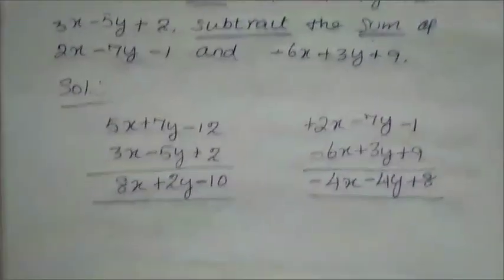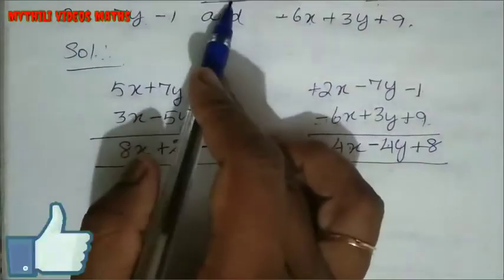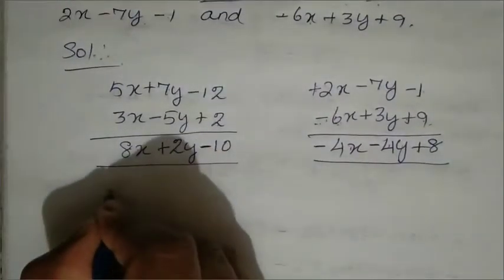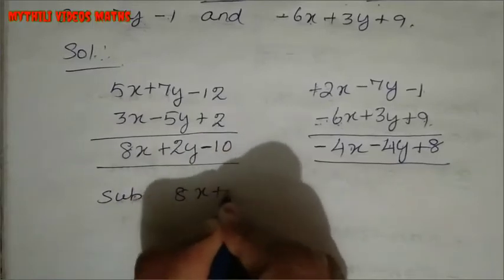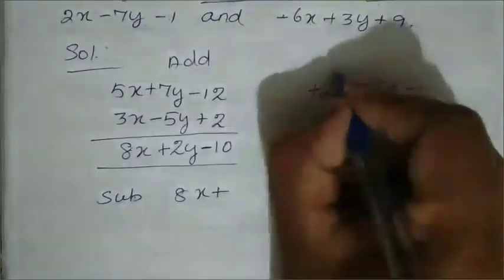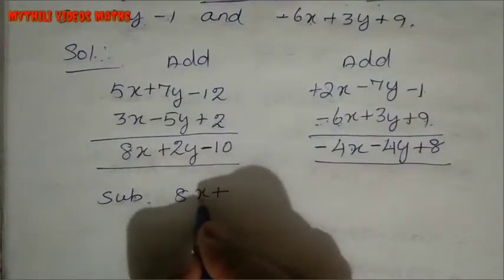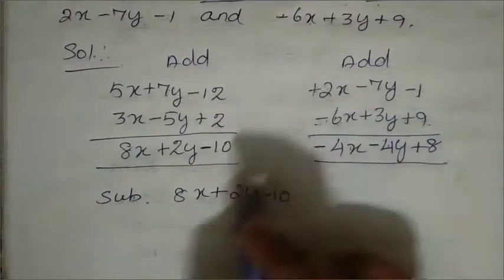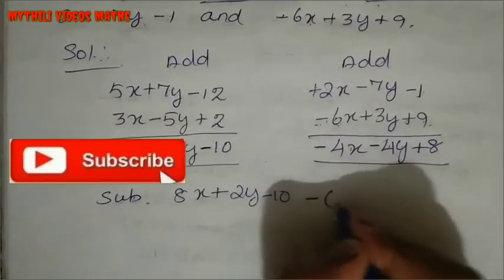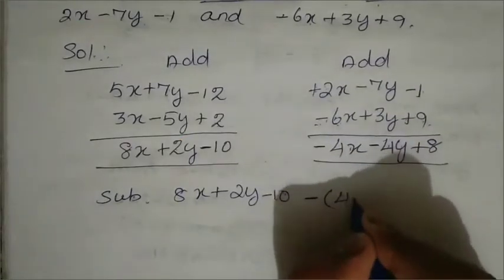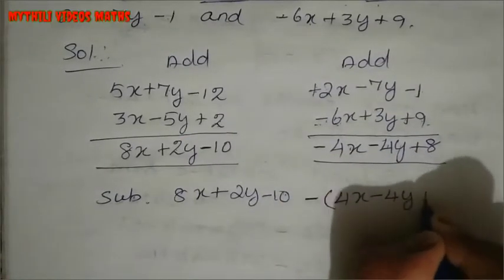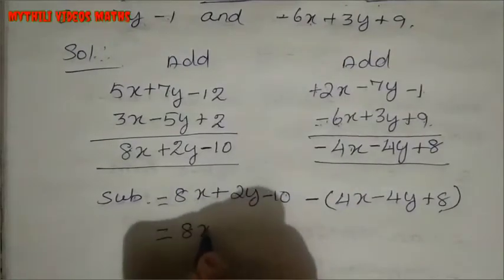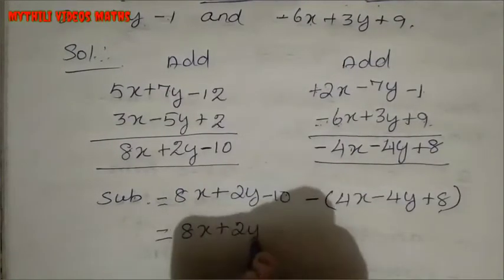Now we subtract the second result from the first. We have 8x plus 2y minus 10, and we subtract minus 4x minus 4y plus 8. We open the bracket with a minus sign, so: 8x plus 2y minus 10, minus of (minus 4x minus 4y plus 8). Writing the first expression as it is: 8x plus 2y minus 10.